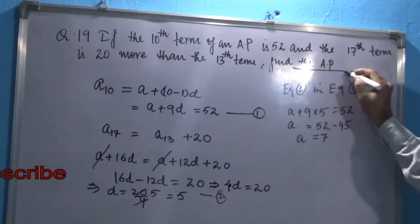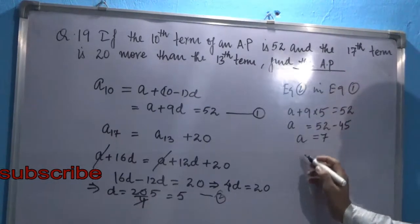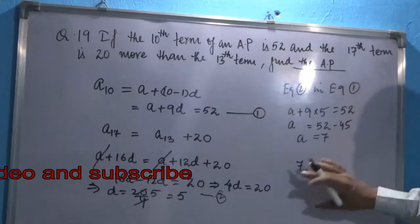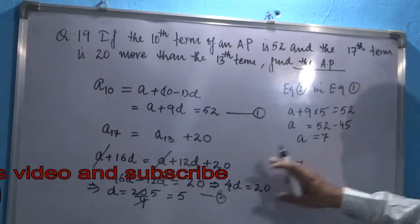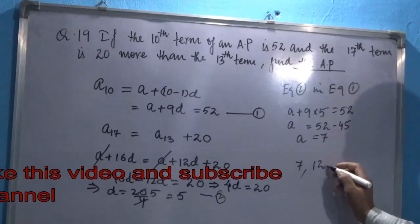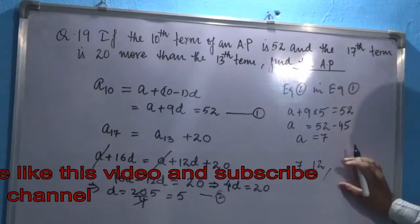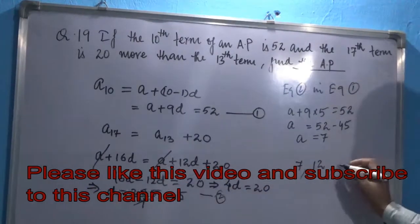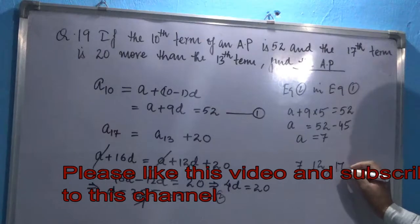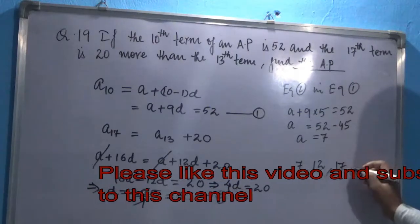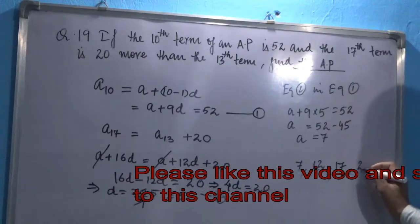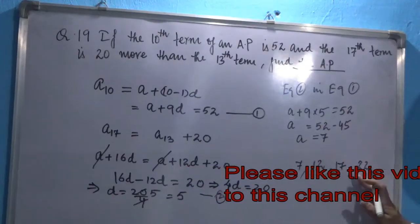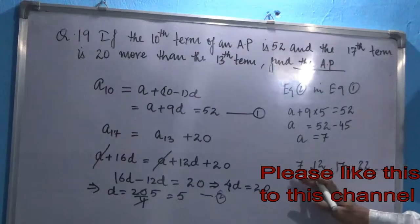Now we have to find the AP. The AP will start with the first term, which is 7. Second term will be A plus D, which is 7 plus 5, will be 12. Third term will be A plus 2D, that is 7 plus 5 into 2, which is 17. Again, you add 5, it will give you 22. And that is how this AP is formed, and we have got it.